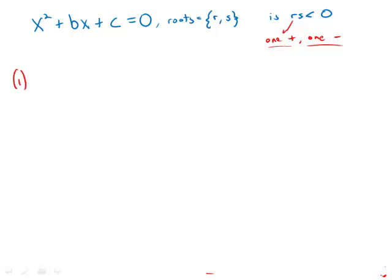So statement number one gives us the information that b is negative, b is less than 0. So let's think about this. If we factor x squared plus bx plus c, we're going to factor it into two things here, and it's going to be x plus or minus something, x plus or minus something.